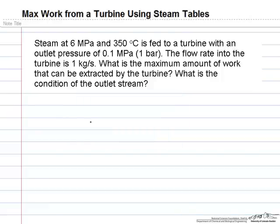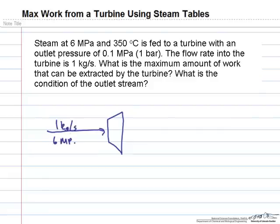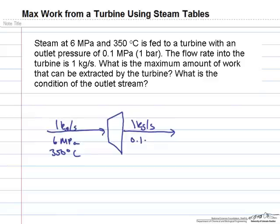The first thing to do is draw a diagram of the system. We have a turbine fed with steam at 1 kg per second at 6 MPa and 350 degrees C. Coming out of the turbine we have the same mass flow rate, 1 kg per second, but now at 0.1 MPa and an unknown temperature.